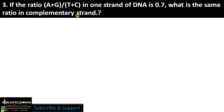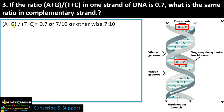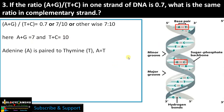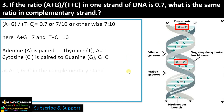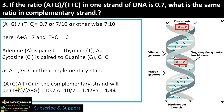Question 3: If the ratio of (A+G)/(T+C) in one strand is 0.7, what is the same ratio in the complementary strand? Given (A+G)/(T+C) = 0.7, that is 7:10 — so A+G = 7 and T+C = 10. In the complementary strand, adenine becomes thymine and guanine becomes cytosine; thymine becomes adenine and cytosine becomes guanine. Therefore the ratio becomes (T+C)/(A+G) = 10/7, which is approximately 1.43.